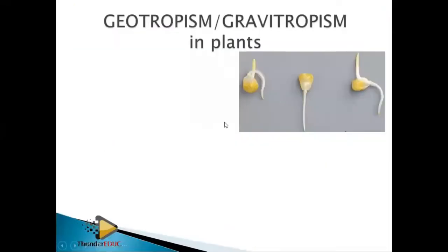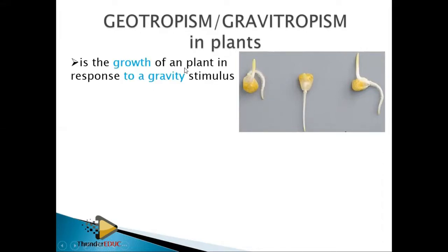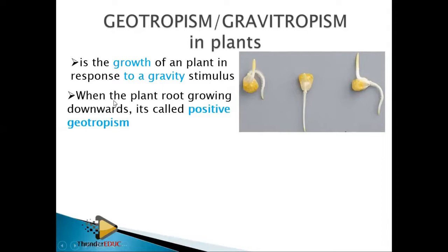Now, what about geotropism, sometimes called gravitropism? 'Geo' refers to the earth's crust and the pull of gravity. All roots are growing towards gravity. Geotropism is the growth of a plant in response to gravity — the stimulus this time is gravity.